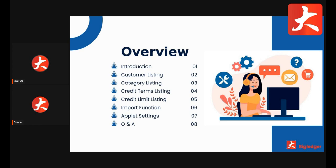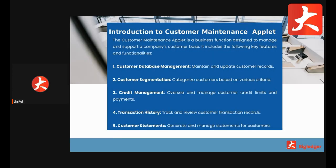The last section will be Q&A. The customer maintenance applet is a business function designed to manage and support a company's customer base. It includes the following key features: customer database management to maintain and update customer records, customer segmentation to categorize customers based on various criteria, credit management to oversee customer credit limits and payments, transaction history to track and review customer transaction records, and customer statements generation.